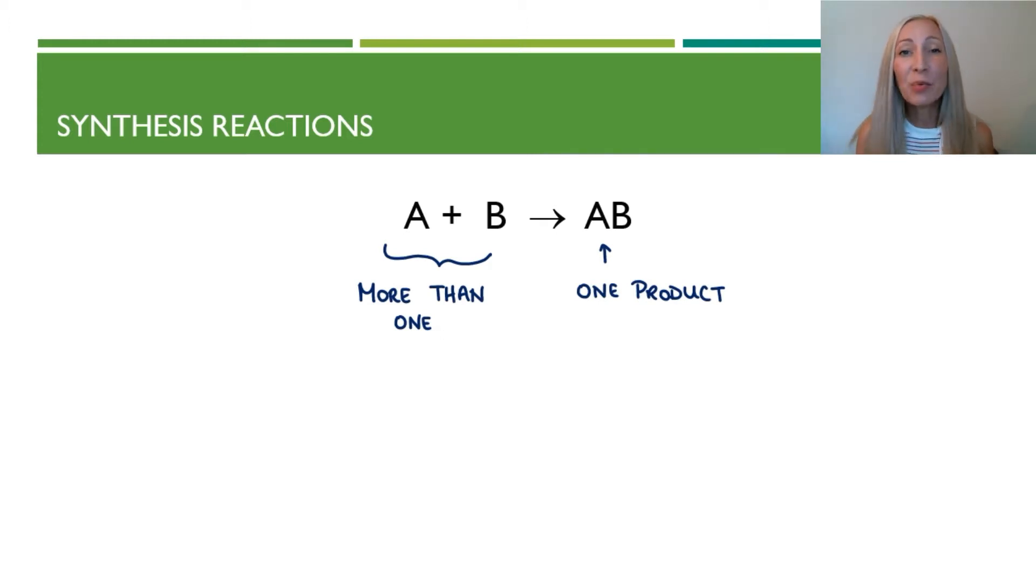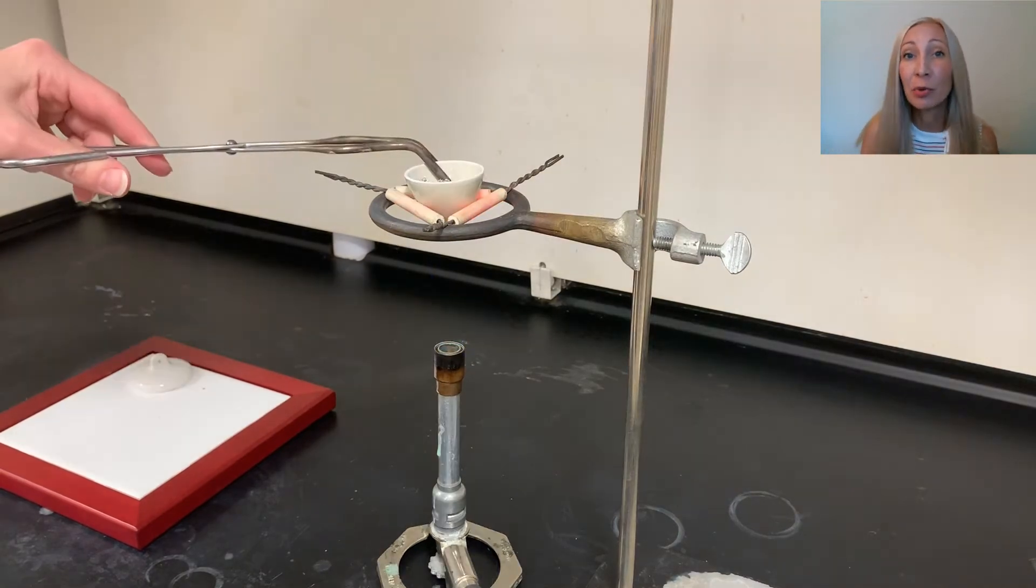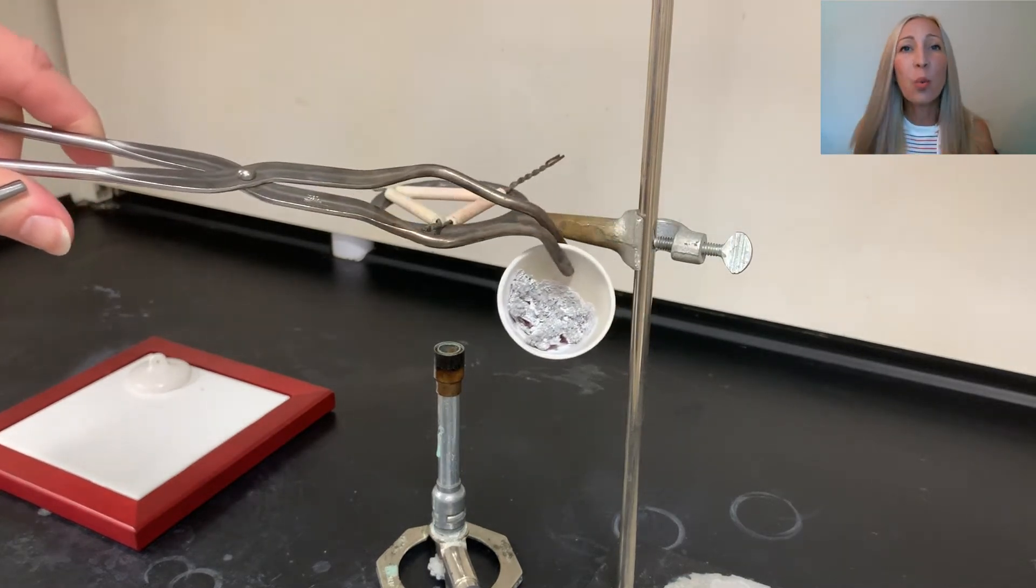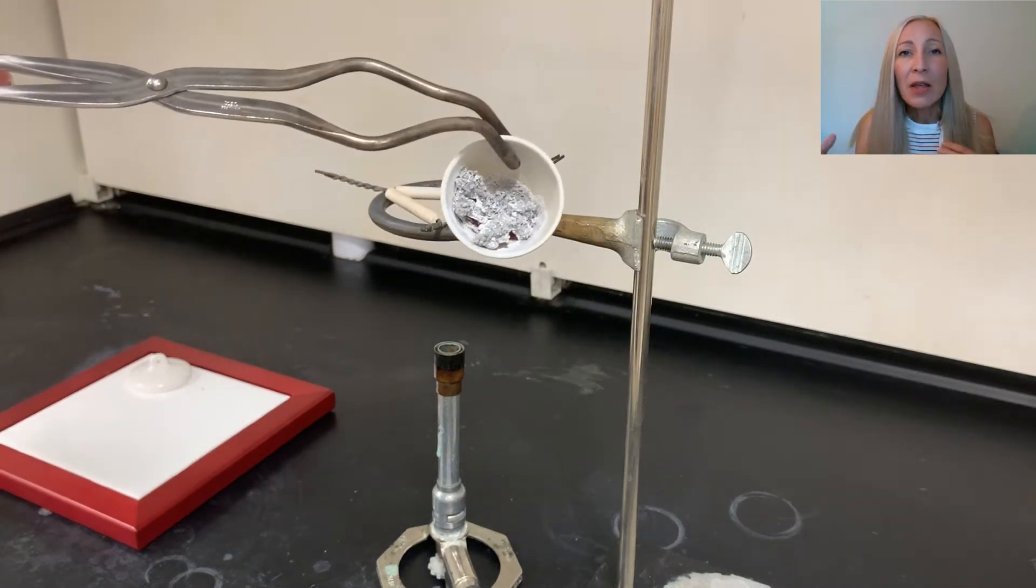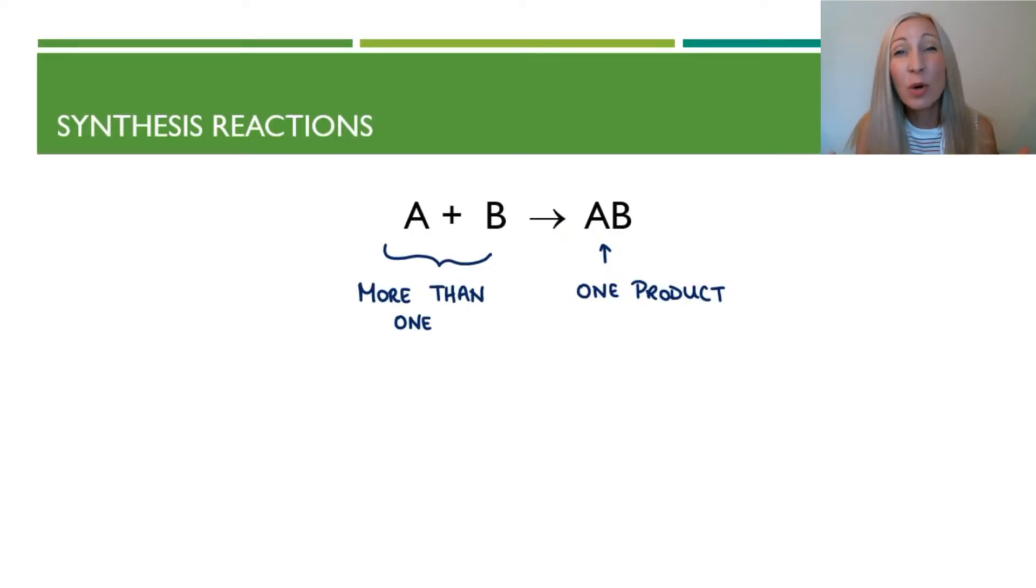Let's take a look at a real example of a synthesis reaction. Here I'm going to be burning strips of magnesium. Now magnesium is a shiny, silvery metal. And when I react it with oxygen gas during the burning process, it turns into magnesium oxide, which is a white powder. The reactants and products do not have very similar physical characteristics. That's one way that you can tell that a chemical reaction took place.